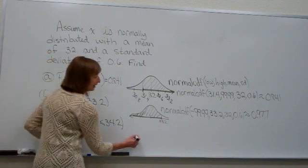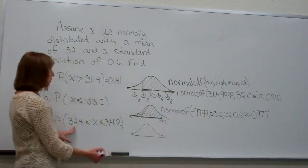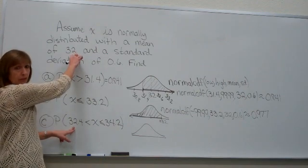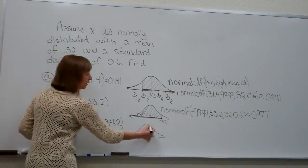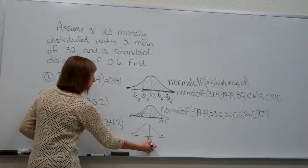Now the last one, we're going to draw, again, our normal curve. 32.4 is bigger than 32. So I'm going to go right of the highest point a little bit to do my 32.4. And 34.2 is even bigger than that. So we'll go further out for the 34.2.